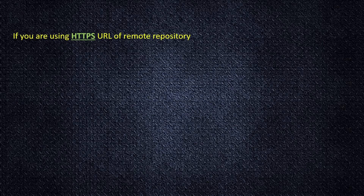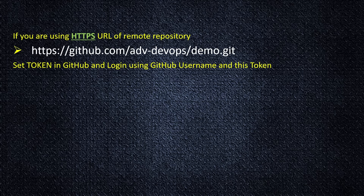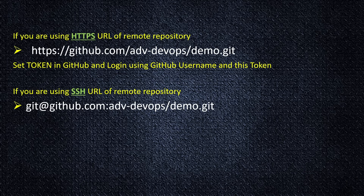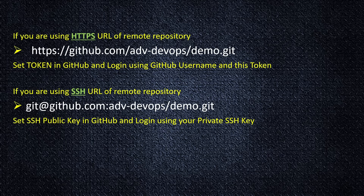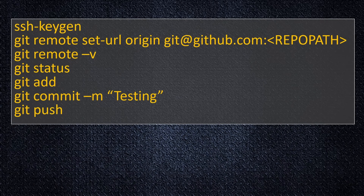If you are using the HTTPS URL of a remote repository, you need to set a token in GitHub and login using your GitHub username and that token. If you are using the SSH URL of the remote repository — which is highly recommended — the URL will look like the SSH format for GitHub, and you need to set the SSH public key in GitHub and authenticate using your private SSH key, which lives on your computer. The commands we used today: ssh-keygen, git remote set-url origin with the SSH URL.